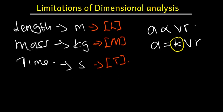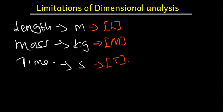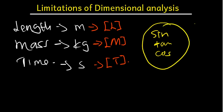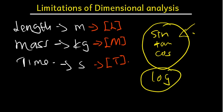The third limitation is that dimensional analysis is not applicable to logarithmic functions, exponential functions, and trigonometric functions. As long as you see sin, tan, or cos, it is not applicable. As long as you see log, it is not applicable. As long as you see e raised to the power of something, it is not applicable. These are not allowed for dimensional analysis.